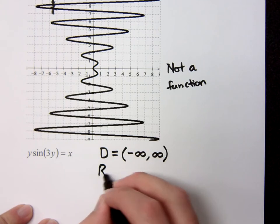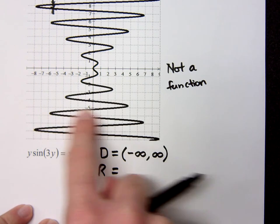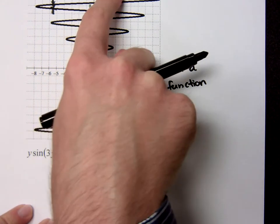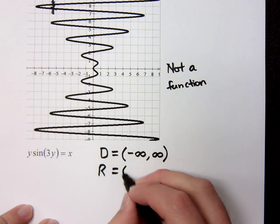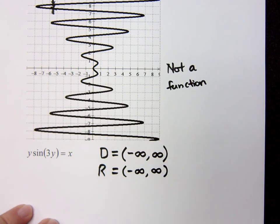What about your range? You see it going from bottom all the way up to the top without stopping, right? So that's also all real numbers. Negative infinity to infinity.